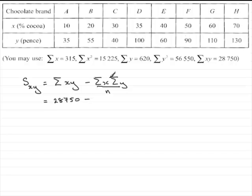Minus sigma x, which is 315, 315 multiplied by sigma y, which is 620, and n, the number of values that you've got here, which is 8, so divide by 8.